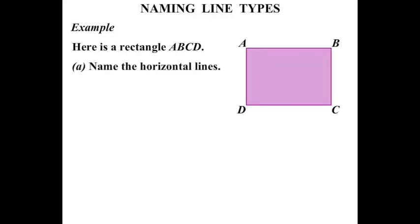We are asked firstly to name the horizontal lines. Horizontal going across like the horizon. We can see that that line there, from A to B, known as AB, we can call that AB, that line.